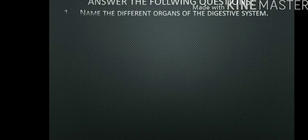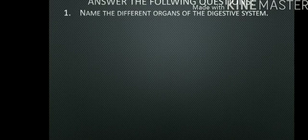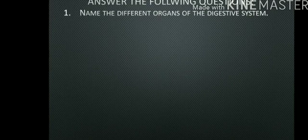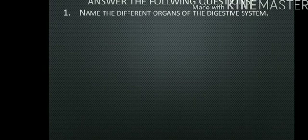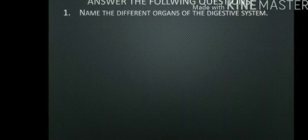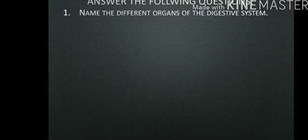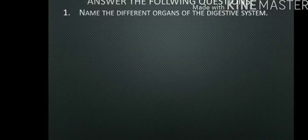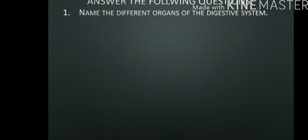First we have answer the following questions. The first question is name the different organs of the digestive system. If you recall back to that video, the previous video where we discussed the digestive system with the diagram, the names of all the different organs are written over there, so you can get your answer from that part of the video.